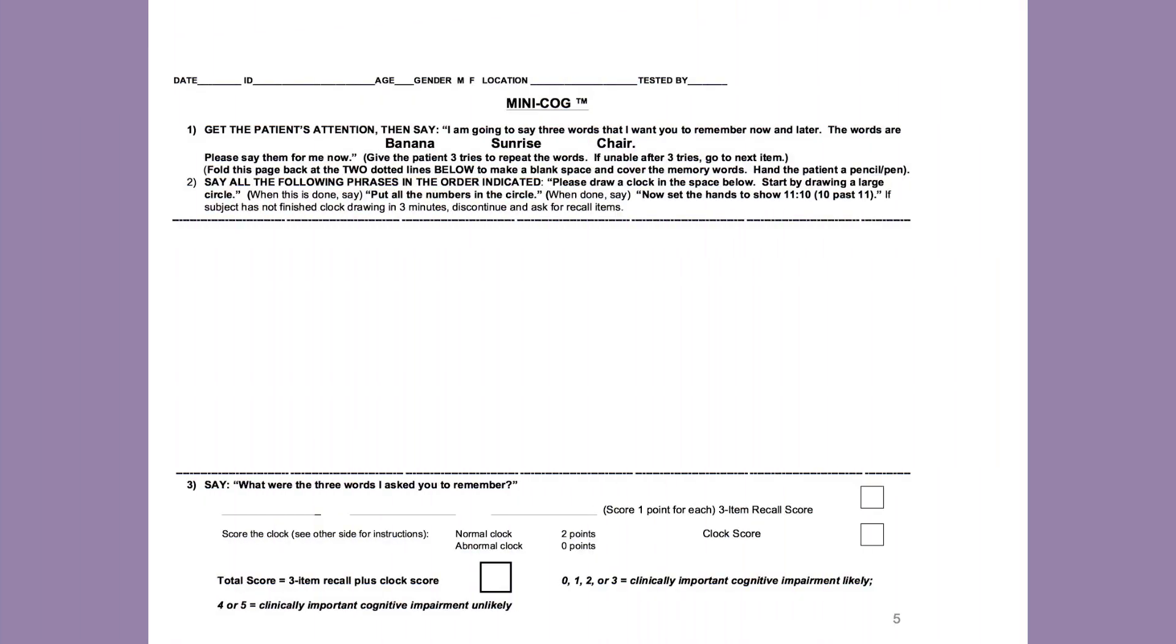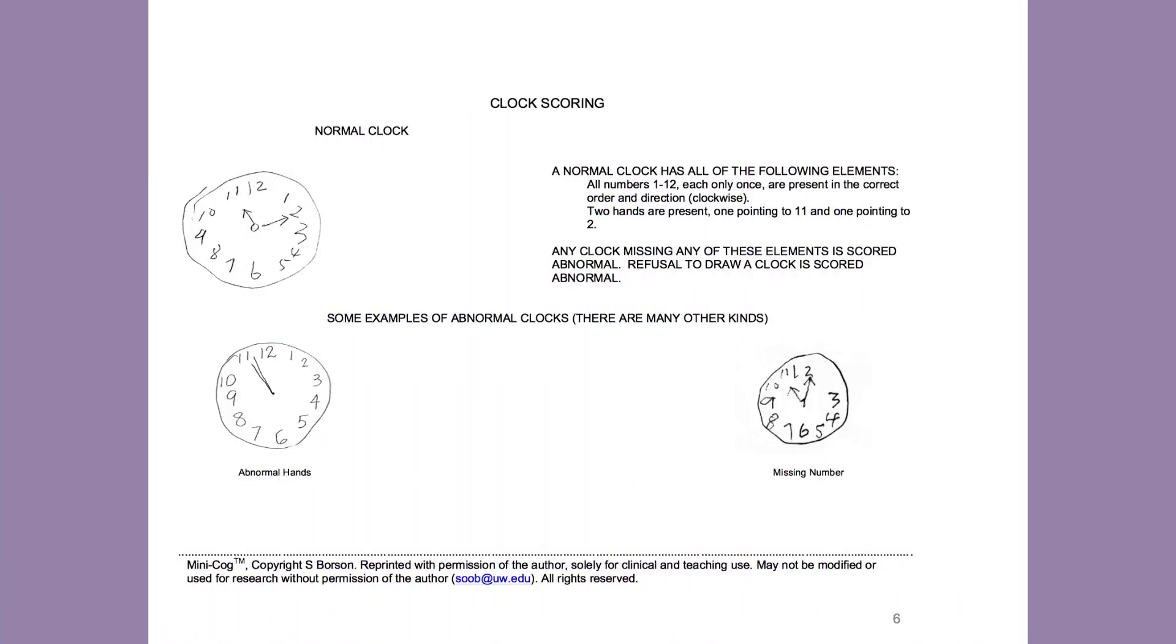This screen shows the updated version of the Mini-Cog. The first page offers instructions for introducing the two components of the test and provides room in the middle of the page for the patient to draw the clock. At the bottom, you see that there is room for scoring. The second page offers specific instructions regarding how to interpret the clock drawing portion of the task by listing the required elements for full credit and showing sample clocks drawn by real patients.